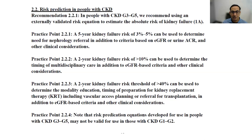A note of caution: risk prediction equations like the kidney failure risk equation, which are developed for people with G3 to G5, are not really useful for earlier stages of kidney disease. The example is obvious — think of a 50-year-old with a GFR of 80, and we'll get there.